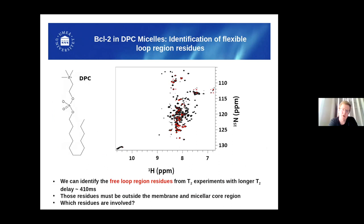Here is an example run when the full-length BCL2 is analyzed by NMR. I'm sure you're all familiar with NMR, so I don't have to dig into details, but you get the correlation between the amide proton and the nitrogen, and each dot represents one amino acid. This slide shows we can obtain a fairly nice HSQC spectrum with full-length BCL2 in DPC. We can also apply a T2 relaxation filter to pinpoint more flexible residues in the protein — flexible residues have a longer relaxation rate, so you can set the cutoff and fish those out. These apparently come from outside the micellar core region.